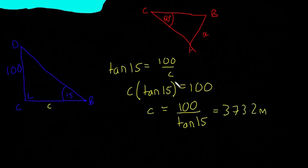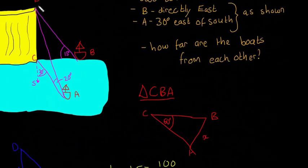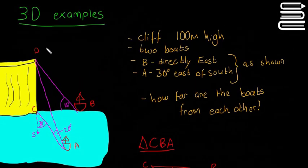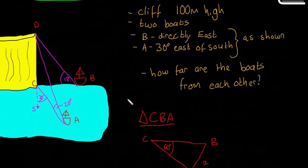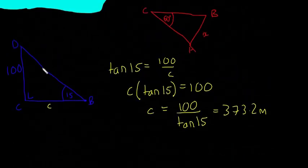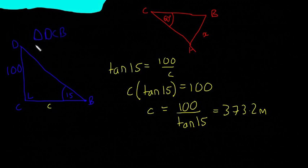And that will get us how far the boat B is from the bottom of the cliff, so that distance C in our triangle. And that distance is 373.2 metres. That's just going to be a calculator. So now I'm going to do the same with this triangle here. With D, A, C. I'm going to draw that one out. I'm just going to label this quickly as well. So that's the triangle DCB.